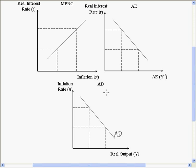In the aggregate demand curve, we have the inflation rate and real output together — the inflation rate, which is the change in price level, on the vertical axis, and the quantity demanded on real output on the horizontal axis. This gives us a price-quantity demanded relationship. Because the inflation rate is the change in the price level over time, we call it the dynamic aggregate demand curve — that's where the word 'dynamic' comes from.